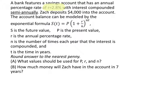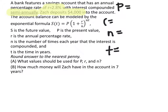We have an R value given to us. We have how much he deposits. And we see that it compounds semi-annually, which is twice a year. So we need to figure out what P, R, N, and T are.